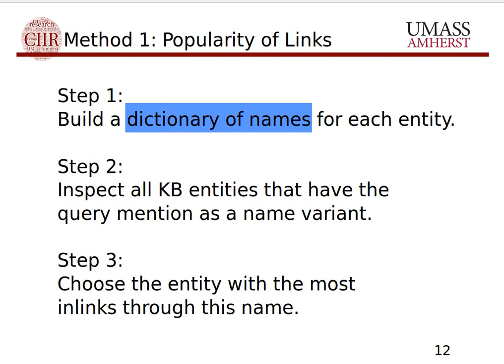Let's start with our very first method. It's a simple method but it actually gets you very far along the way. It's usually referred to as the popularity method and it works by having multiple steps. In step one we build a dictionary of names for each entity in our knowledge base. In step two, our query mention comes into play — we inspect all entities that have the string mentioned as a name variant, either as the canonical name or as other names identified for this entity.